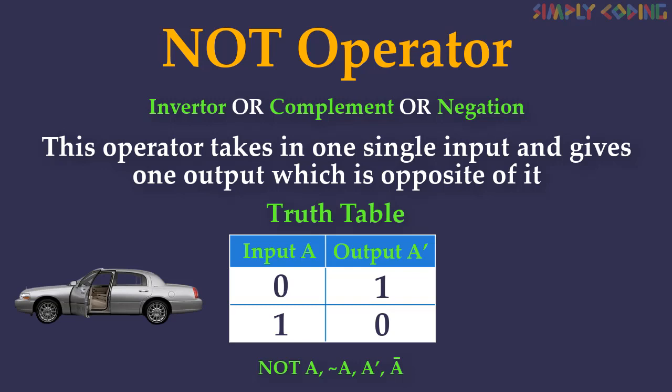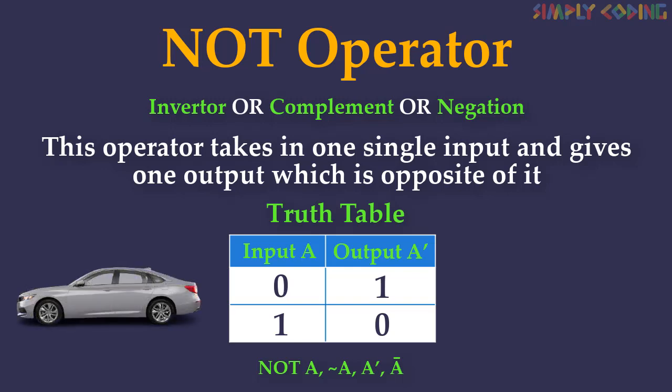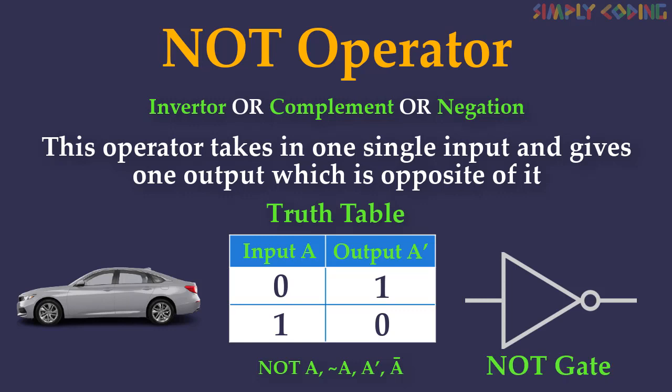Since this table gives all possible values of input and output, this is the truth table for the NOT operator. A real-life example of a NOT gate is that of a car door — if it is not closed, the alarm light will go on, and vice versa. In digital circuits it is called a NOT gate. It takes only one input signal and produces one output signal. The output of a NOT gate is the complement of its input. It is also called an inverter as it inverts the input signal.